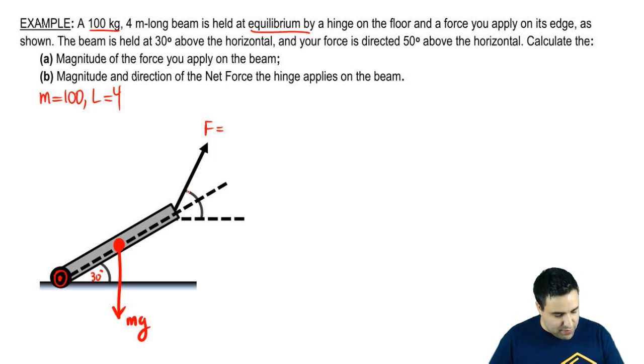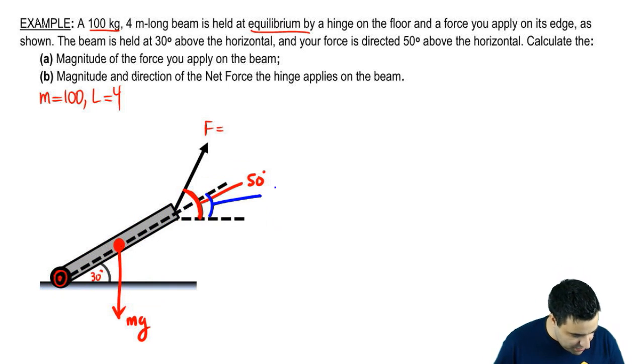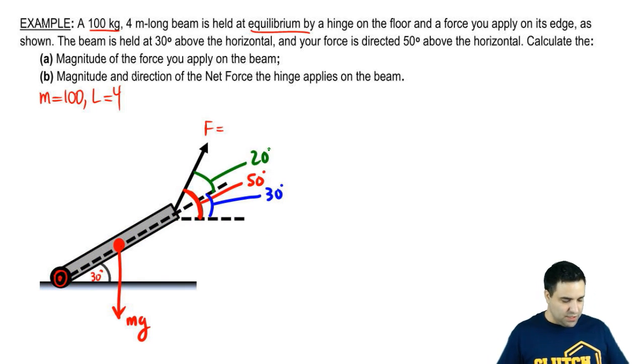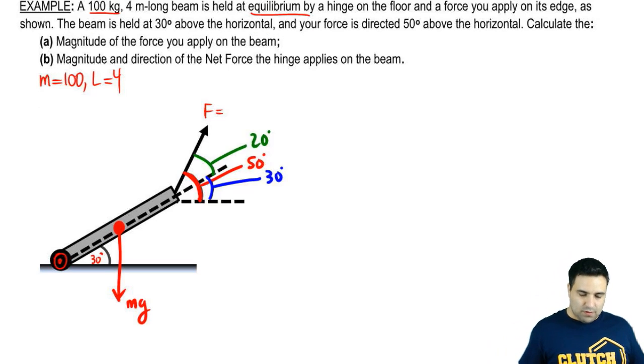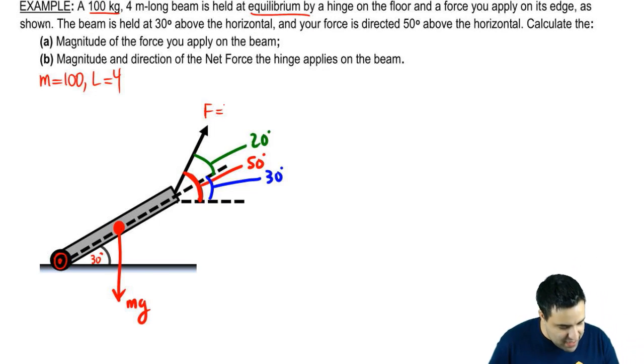And your force is directed at 50 degrees above the horizontal. So the distance between your force all the way to the horizontal right here is 50. Now, if this is a 30, this is a 30 as well. So we're going to split up that 50 into, you got a 30 here. And if the bottom is 30 and the whole thing is 50, it means that the top over here is 20. So 20 plus 30 equals 50. We want to find F.